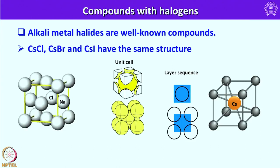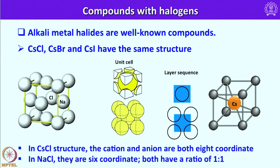The structure of sodium chloride is face-centered cubic (FCC), whereas cesium chloride, cesium bromide, and cesium hydride adopt a body-centered cubic (BCC) structure. In the cesium chloride structure, both the cation and anion are 8-coordinate — cesium is 8-coordinated and the halide ions are also 8-coordinated, each having 8 adjacent alkali metal ions. In sodium chloride, both chlorine and sodium are 6-coordinate (octahedral), with each sodium surrounded by 6 chloride ions and vice versa.